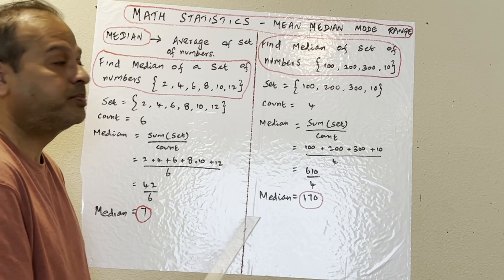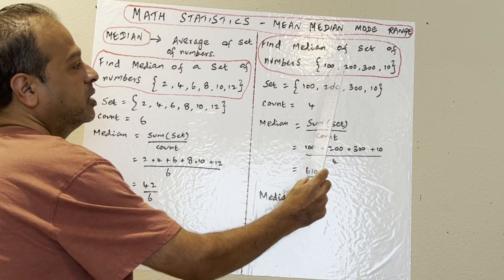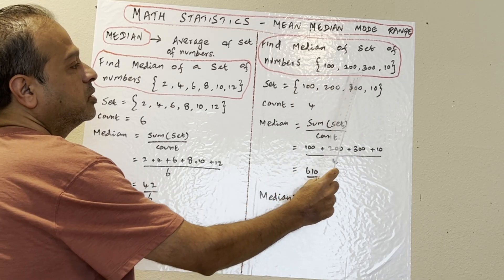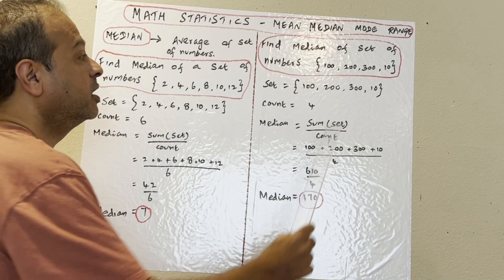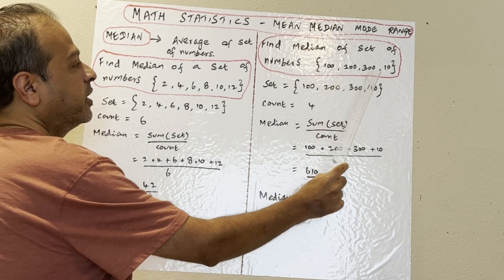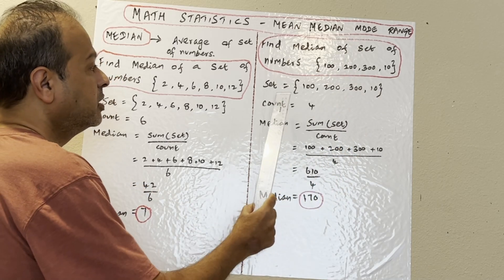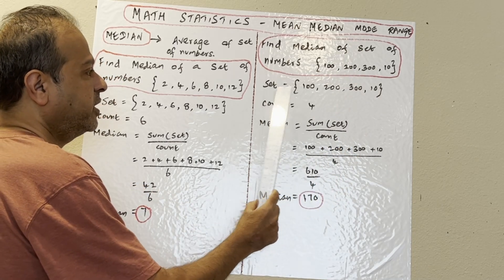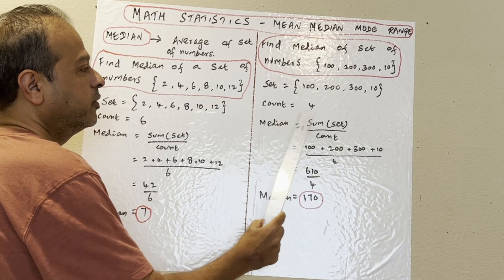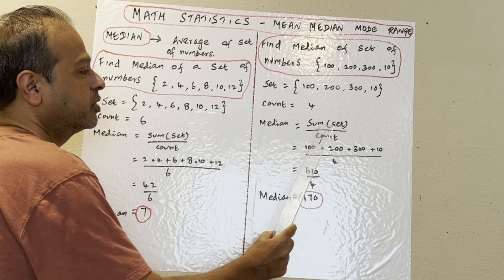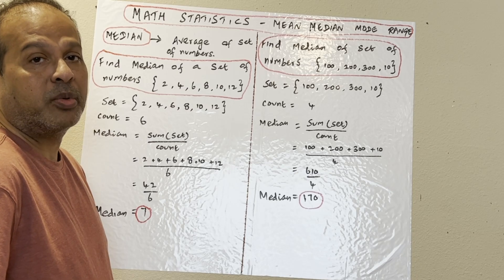Next example: find the mean of a set of numbers — 1, 2, 3, 4. There are four numbers in the set: 100, 200, 300, 10. So the set has 100, 200, 300, 10 — four numbers. Mean equals sum of set divided by count.